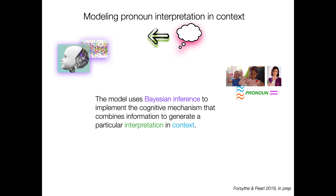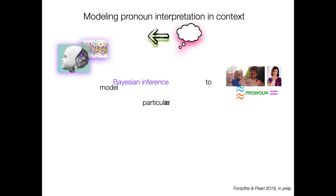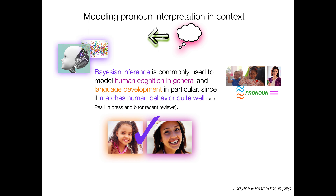The model is going to use Bayesian inference to implement the cognitive mechanism that combines information together to generate a particular interpretation in context. Bayesian inference is commonly used to model human cognition in general and language development in particular